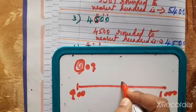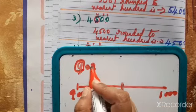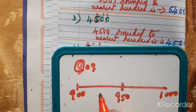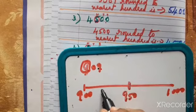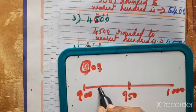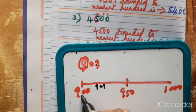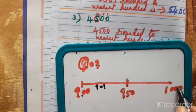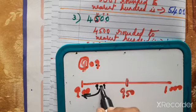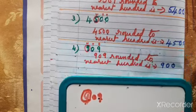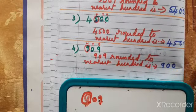The middle number between 900 and 1000 is 950. So 909 falls between 900 and 950 — it is nearer to 900 than to 1000. Therefore, 909 rounded to the nearest hundred is 900. You can use either the poem method or the alternate number line method — any one method you can apply.